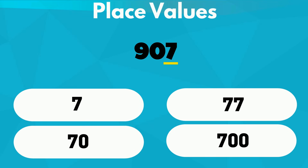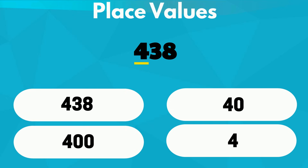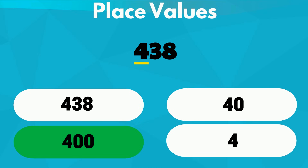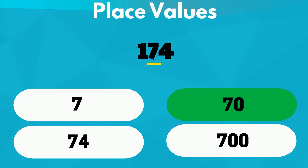Next, the underlined digit 7 is in the hundreds place, so its value is 400. Next, the underlined digit 7 is in the ones place, so its value is 7. Next, 4 is in the hundreds place, so its value is 400. And lastly, the underlined digit is in the tens place, so its value is 400.